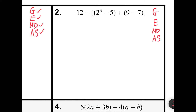Problem number 2 says 12 minus the quantity 2 cubed minus 5 plus 9 minus 7. So I'm going to start with grouping symbols. I have both brackets and parentheses — two sets. If you have grouping symbols inside other grouping symbols, you work from the inside out. So I'm going to work 2 cubed minus 5 and 9 minus 7 first. I know that 2 cubed is 8, so this will be 8 minus 5, giving 12 minus 3 plus 9 minus 7 is 2.